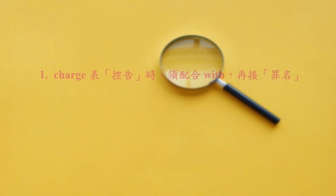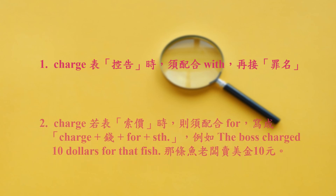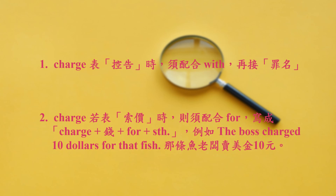One: 'charge' 表控告时，需配合介词with，再接罪名。Two: 'charge' 又表所索驾驶费用时，则需配合介词for，写成charge加上for，再加something。例如：'The boss charged $10 for that fish.' 那条鱼，老板卖美金10元。